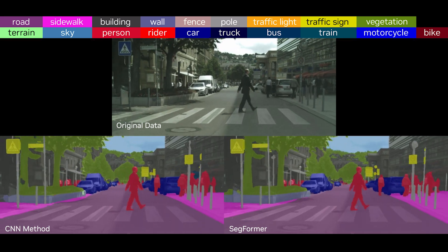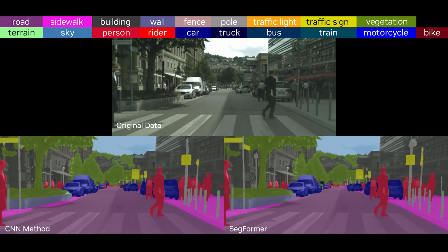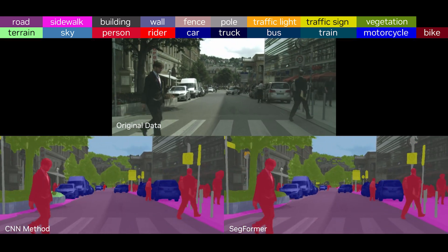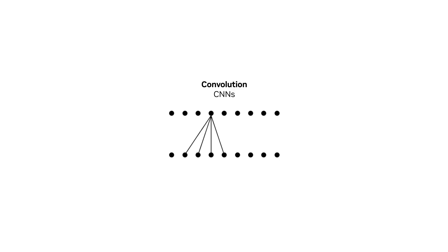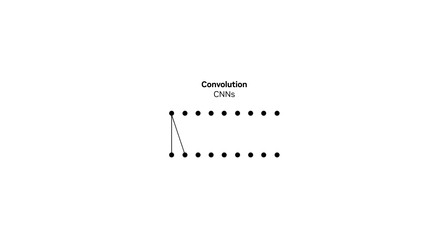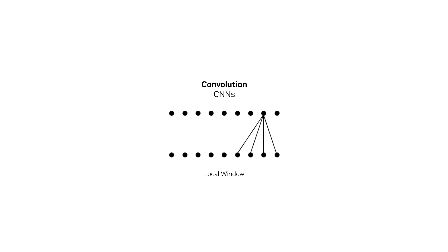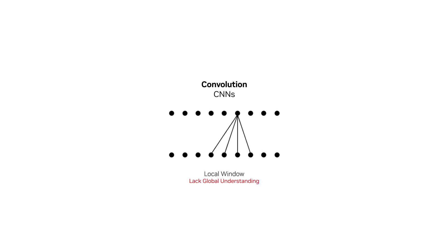Semantic segmentation assigns a category to every pixel in an image, typically using convolutional neural networks, or CNNs. These networks use local window-like operations. They are efficient but lack a global understanding of the image.